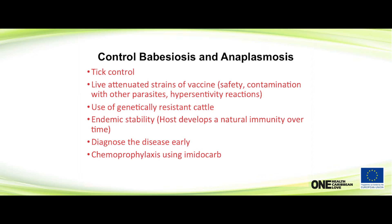Try to get genetically resistant cattle, try to develop endemic stability, diagnose the disease early. If you have imported cattle, take temperatures all the time, watch them closely, and try to treat early. It's thought that chemoprophylaxis using imidocarb may work, but everybody has a different experience.